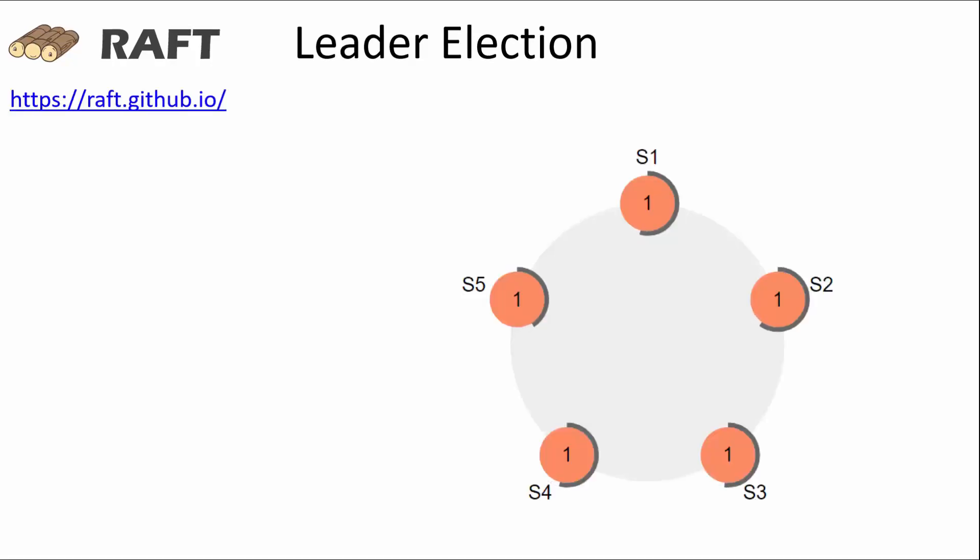Next, I'll explain to you how a leader is elected in a raft cluster. When the raft cluster is launched, all of the nodes send out a proposal as a candidate to become the leader and the node that gets the most votes become the leader. In this case, as we see, S5 has become the leader now.